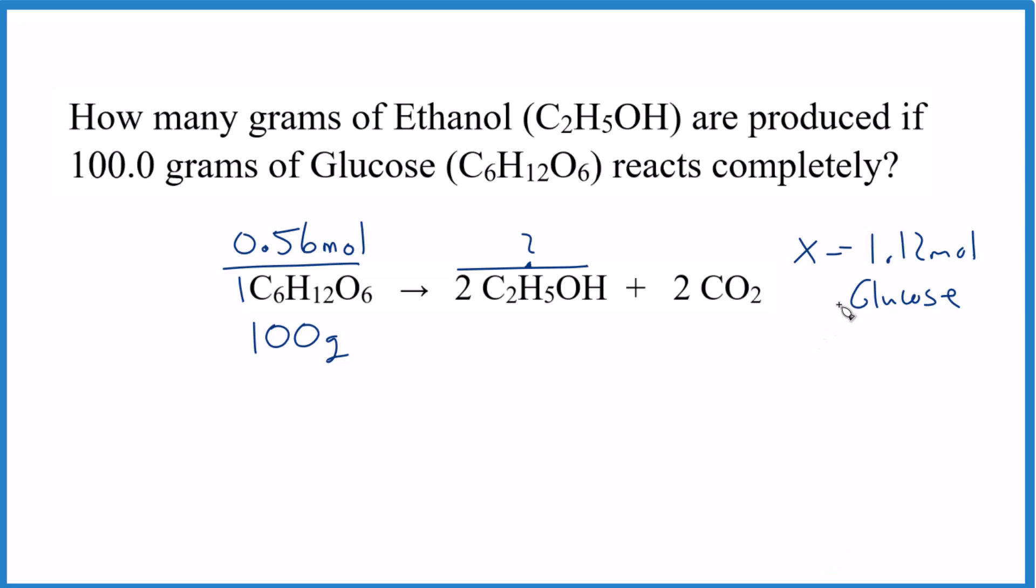Okay, one last way. Your teacher probably showed you this way, it's a great way to do it as well. We're going to use a conversion factor. So we get our moles of the given, so we have 0.56 moles of glucose and we multiply that by a conversion factor.